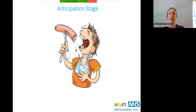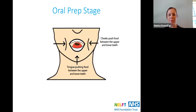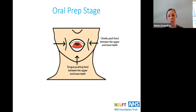Before we even start to swallow there's what we call the anticipation stage. We eat with our eyes to begin with and we smell the food, and this starts to generate saliva — we're beginning to salivate in preparation for what we're going to eat. Then we move on to the oral preparation stage, where the food is bitten and chewed and mixed with saliva, so if something's dry the saliva moistens it up and prepares it for swallowing.